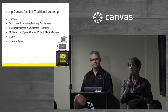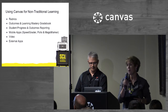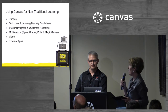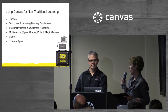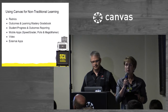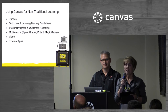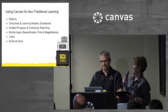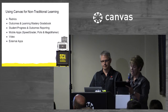We're going to go really quickly because we want this to be an interactive session and we want to hear from you. Here are the awesome tools we use for student-centered learning in Canvas: rubrics, outcomes and Learning Mastery Gradebook. Who's using Learning Mastery Gradebook yet? Are you loving it? Competency-based learning, student progress and outcome reporting. We're also going to get into some mobile apps, how we use those, video and external apps.